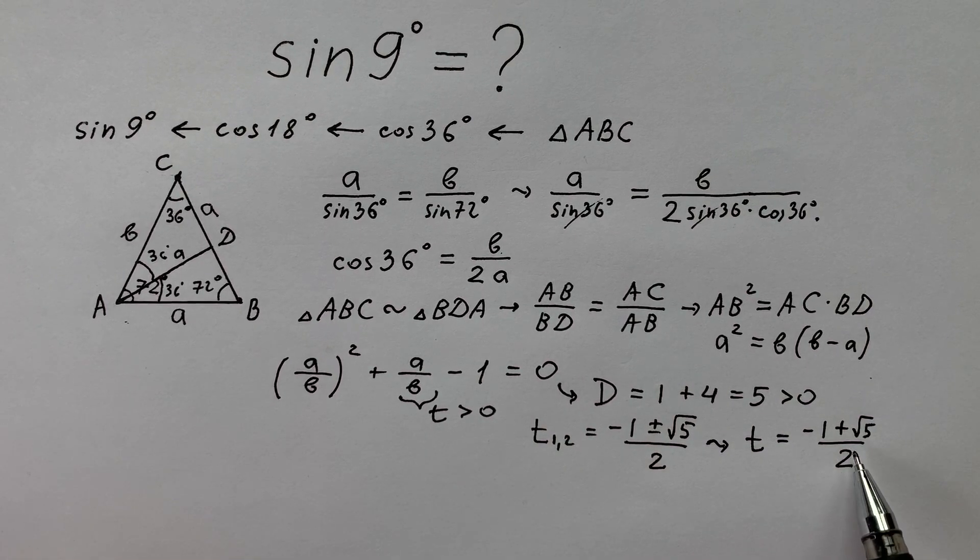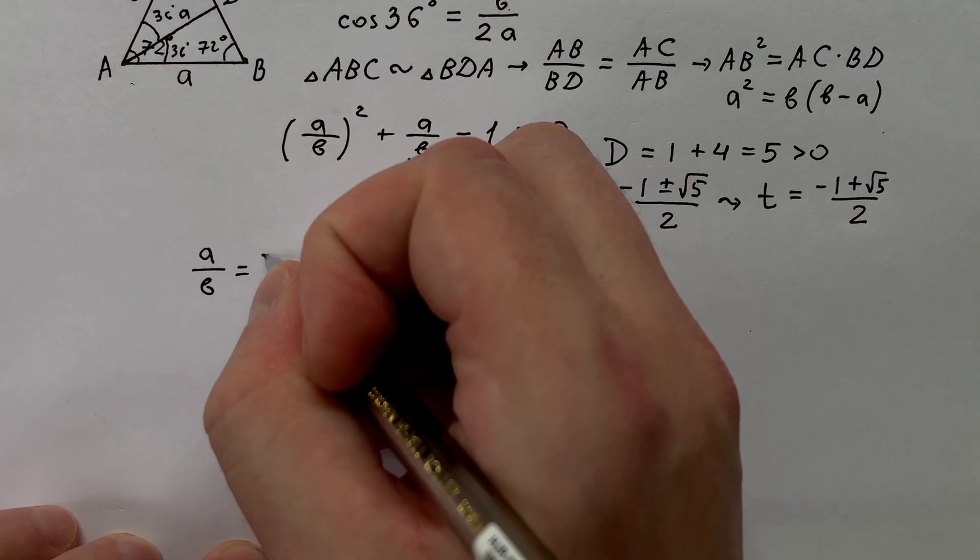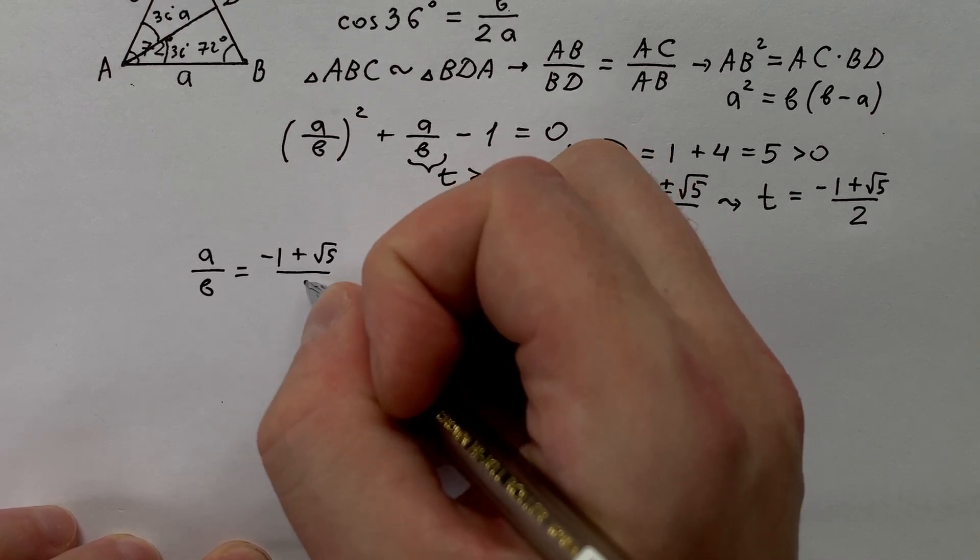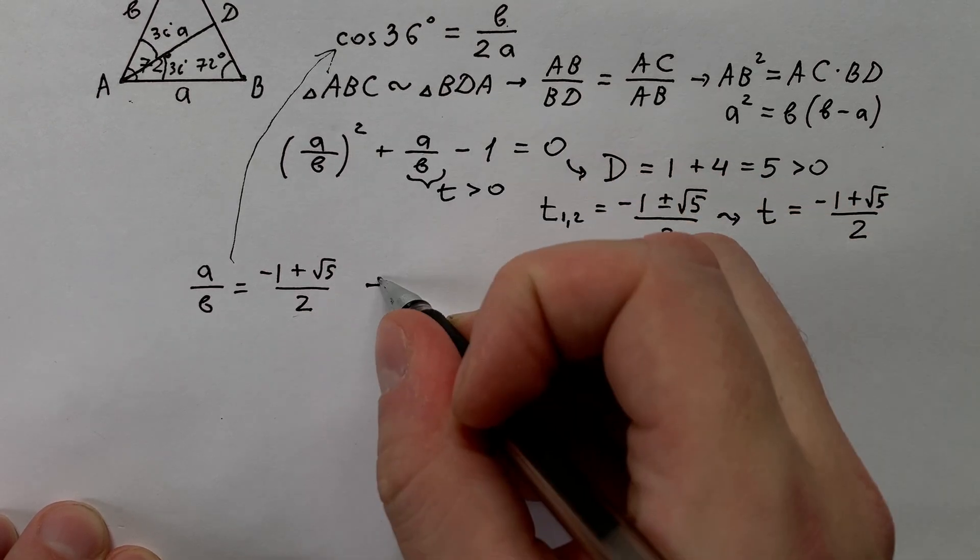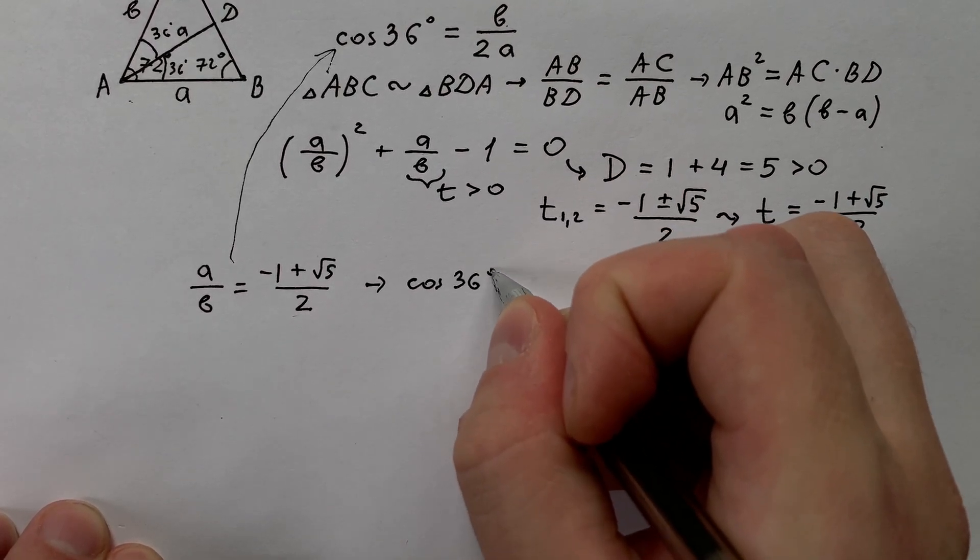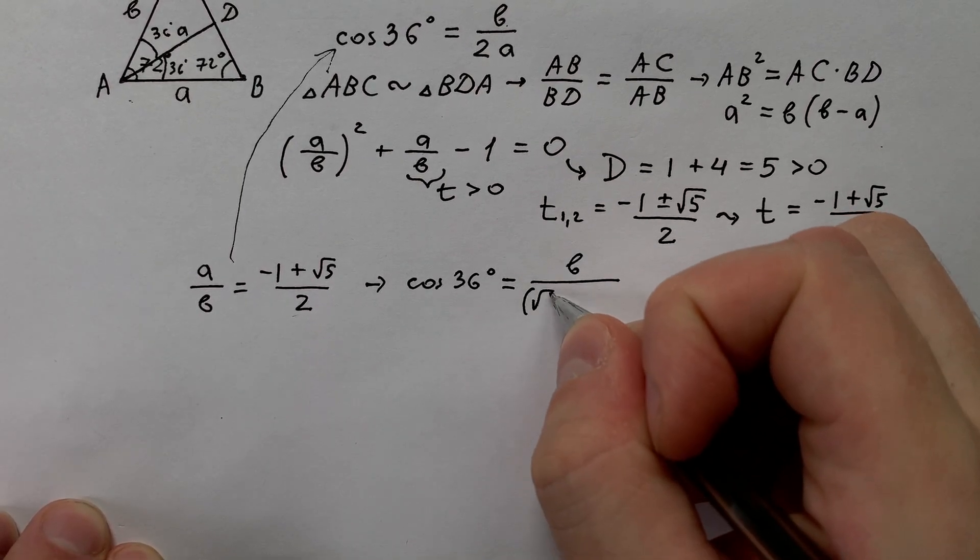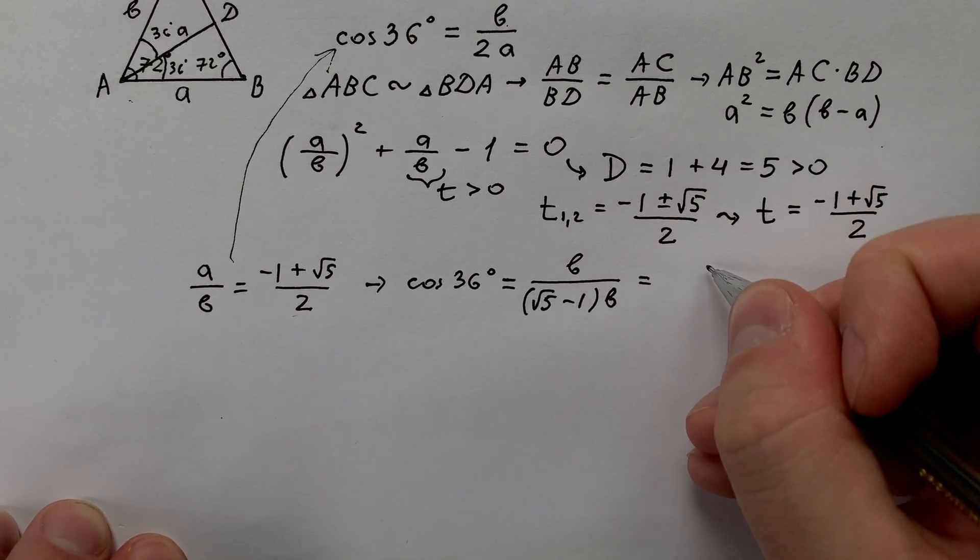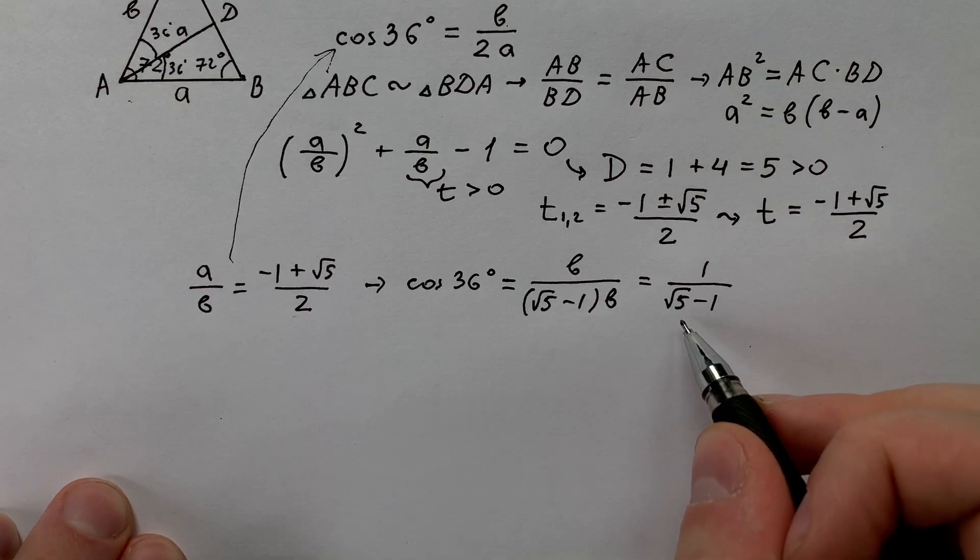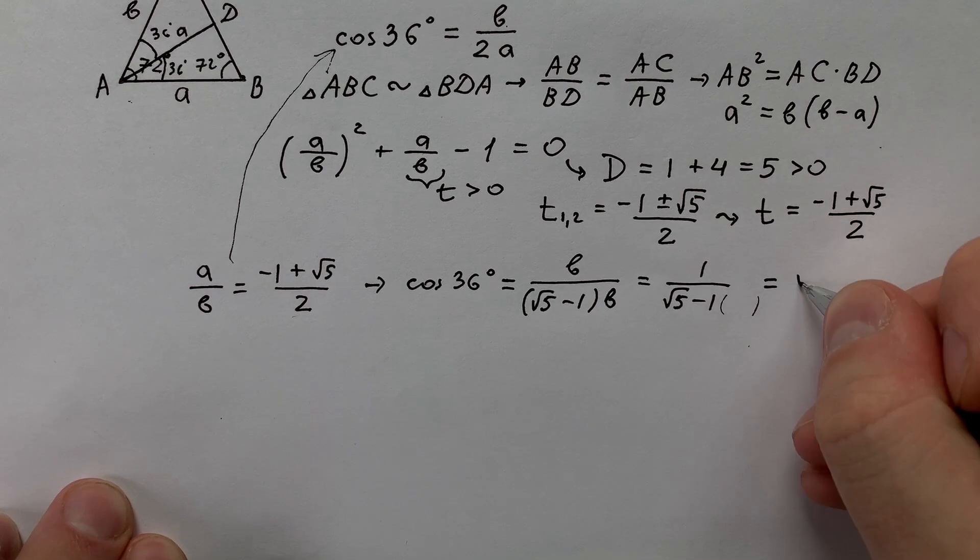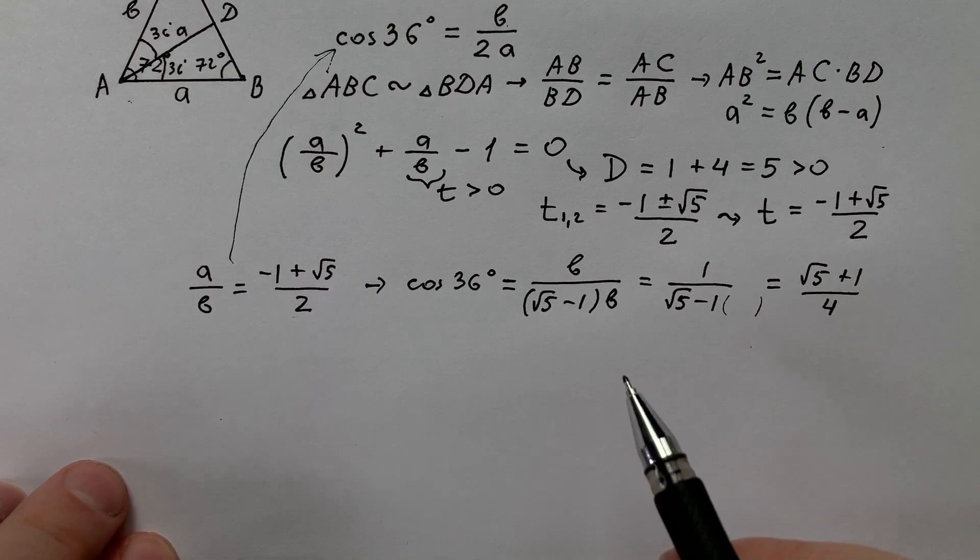So as t equals minus 1 plus square root 5 divided by 2, we get that a divided by b equals minus 1 plus square root 5 divided by 2. And putting this equation to the formula of cosine 36 degrees we get that cosine 36 degrees equals b divided by 2a, or 1 divided by square root 5 minus 1. Or we can put square root 5 plus 1 up and down and we have square root 5 plus 1 divided by 4.